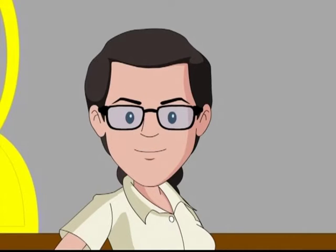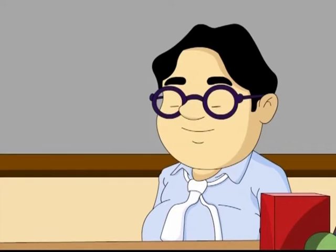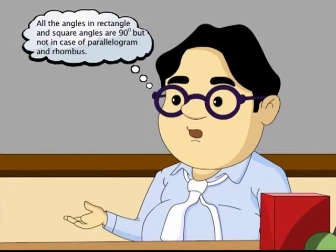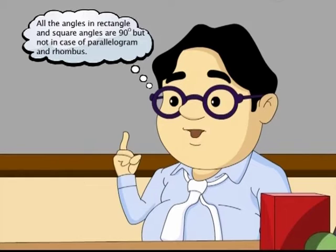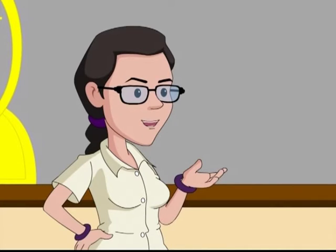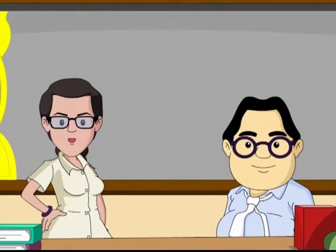So, did you learn to differentiate between various parallelograms, Snail? A rectangle's angles are 90 degrees, a square's angles are 90 degrees, but the parallelogram and rhombus do not necessarily have right angles. Just keep the basics in mind and you will never go wrong.